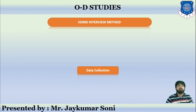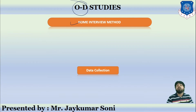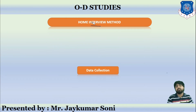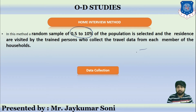First is the home interview method. As the name suggests, what we are going to do is interview people by visiting their homes regarding their origin and destination of travel. We are going to conduct the interview of people by visiting their home and collecting the data of origin and destination of their respective trips. In this method, a random sample of 0.5 to 10 percent of the area is selected.